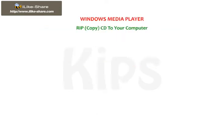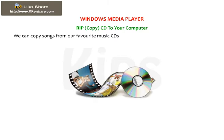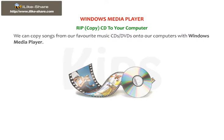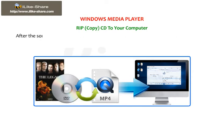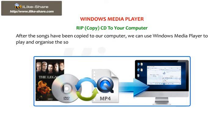Now let us learn how to rip (copy) a CD to your computer. We can copy songs from our favorite music CDs or DVDs onto a computer using Windows Media Player. When we rip music, we are actually copying songs from a CD to a computer. After the songs have been copied, we can use Windows Media Player to play and organize the songs, create playlists, and copy music to a portable device.